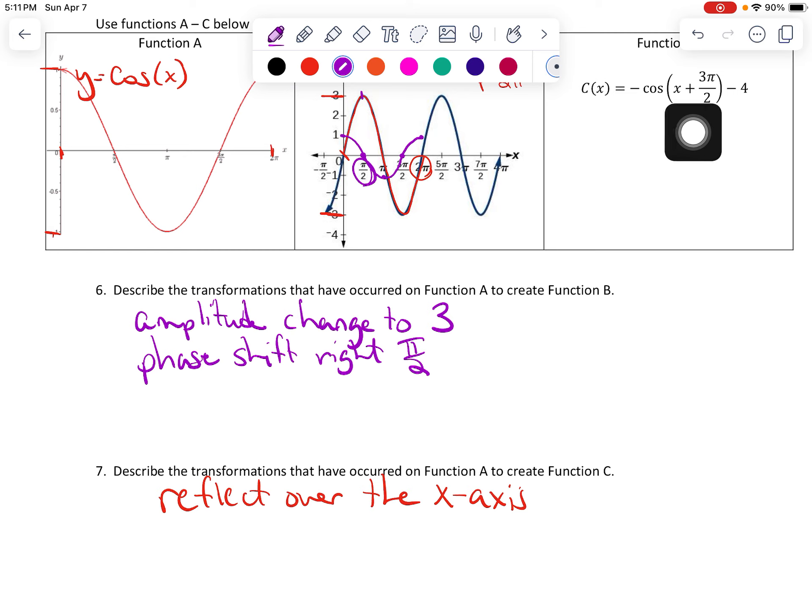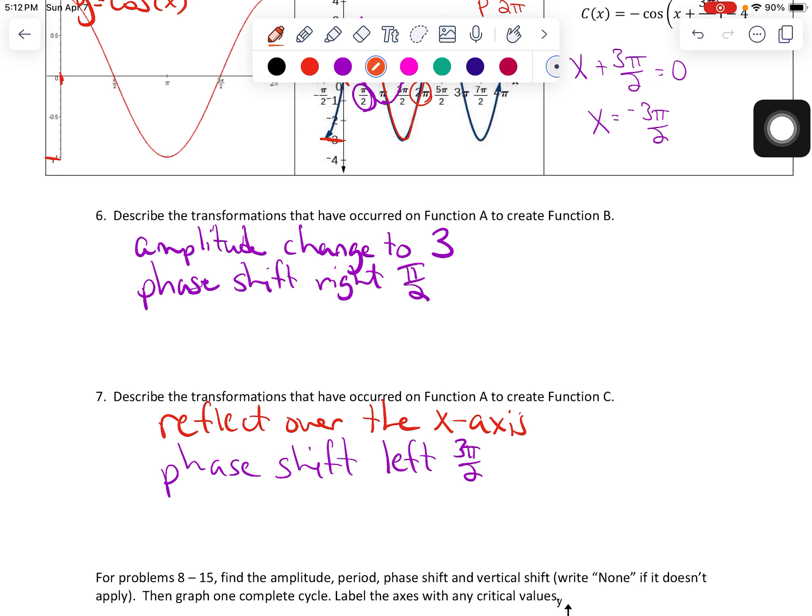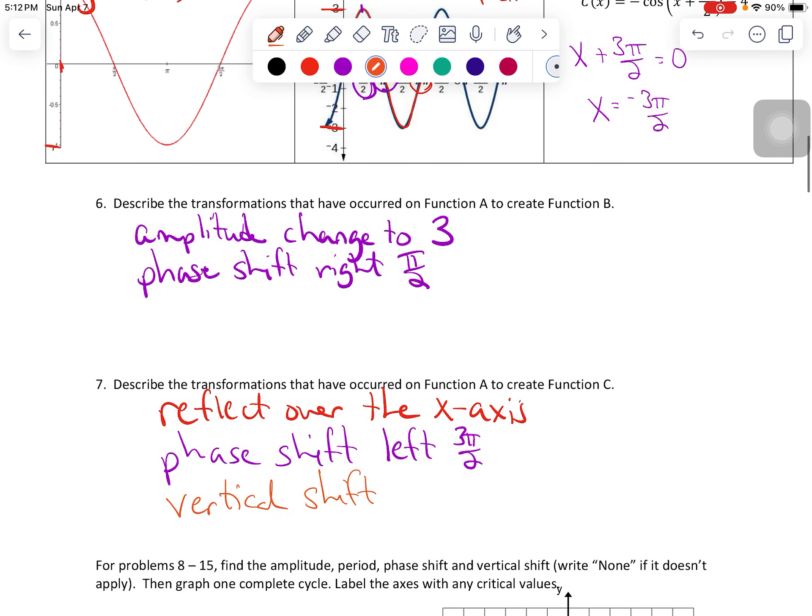We have an x plus 3 pi over 2. So there's going to be a phase shift. If you are ever uncertain what phase shift it looks like, take the whole expression. So x plus 3 pi over 2. Set it equal to 0 and solve for x. So negative 3 pi over 2. So this tells me there's going to be a phase shift left 3 pi over 2. And last but not least, the minus 4 at the end here is going to be a vertical shift down 4.